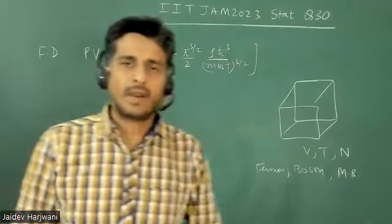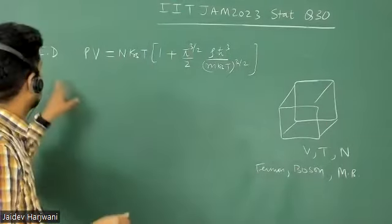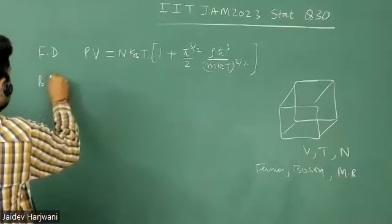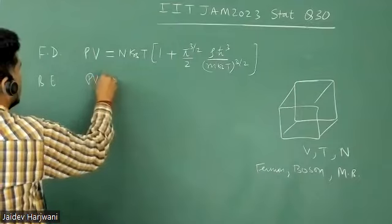So when we derive equation of state for Fermi Dirac distribution, we get an expression like this. For Bose-Einstein, we get it like this.